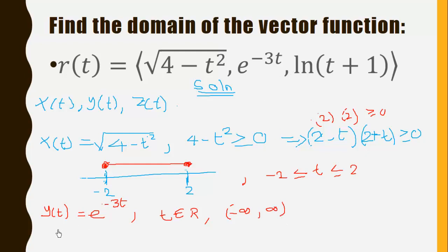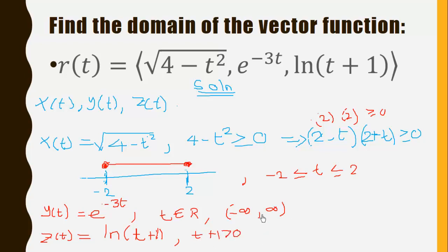For the logarithm function, z(t) equals ln(t plus 1). This function is continuous where t plus 1 is greater than 0, which gives t greater than negative 1. In interval form, the domain of z(t) is the open interval from negative 1 to positive infinity.